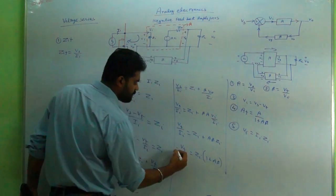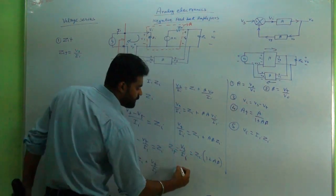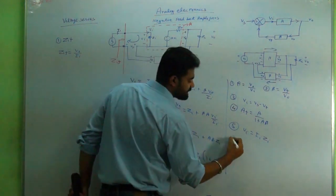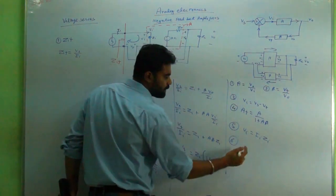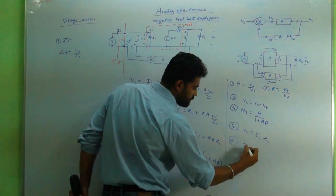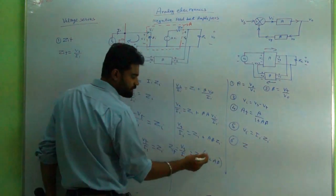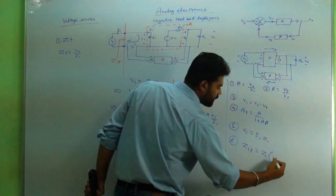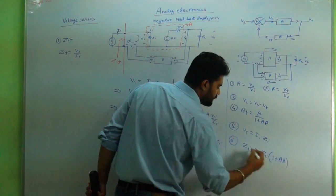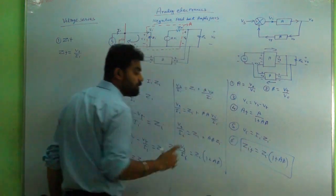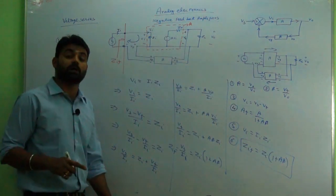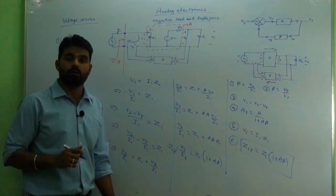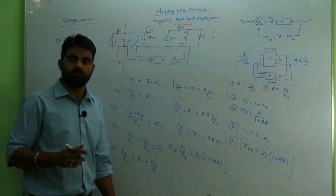This yields us Zi(1 + Aβ), that is nothing but ZIF. So ZIF = Zi(1 + Aβ).